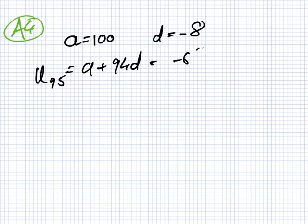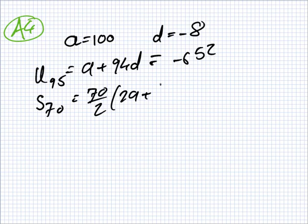And then what do they want next? The sum of the 70th terms. The formula is N over 2, 2A plus N minus 1D. So I'll put in the numbers. N over 2, what's that? 70 over 2, 2A plus N minus 1D. So what do we get here? 35 times 200 minus, one sec, one sec, you're killing me here.